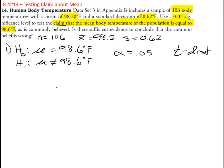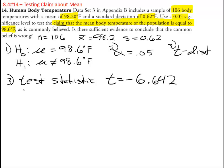Okay so that was step 2. This was the first part of step 3. The real part of step 3, your test statistic is t equals negative 6.642. The p value is less than 0.0001.